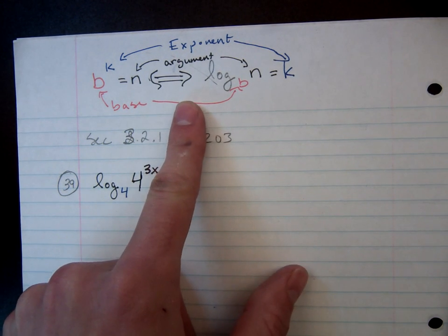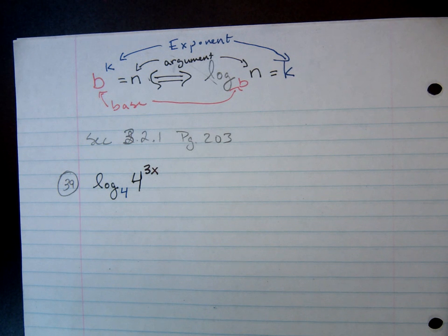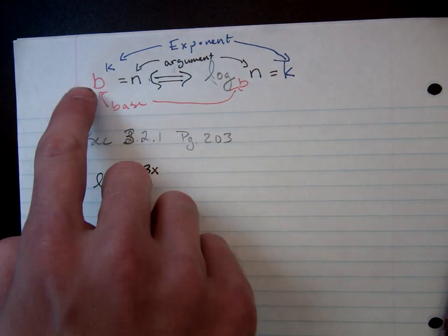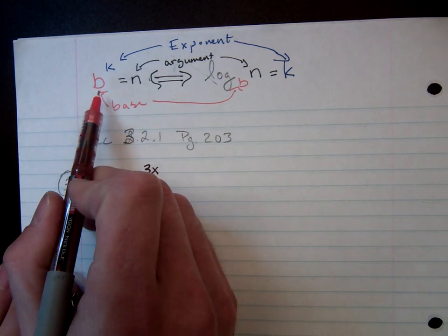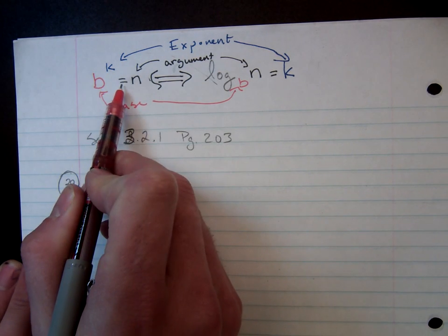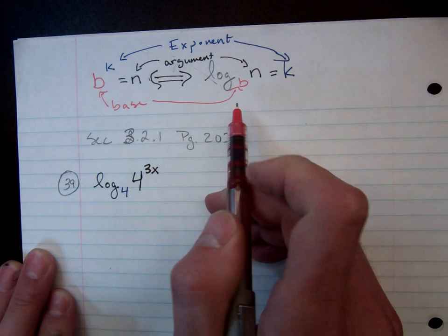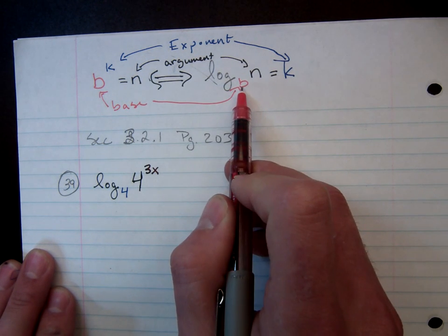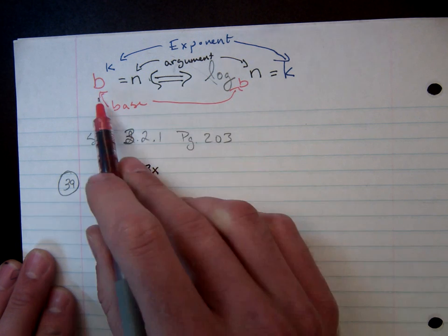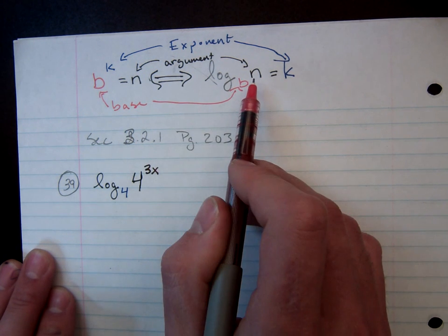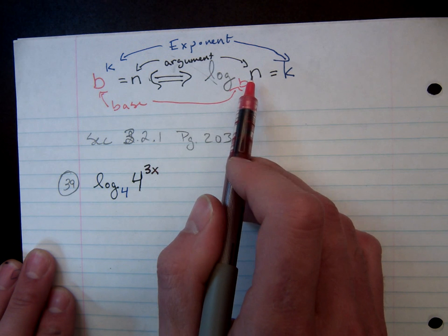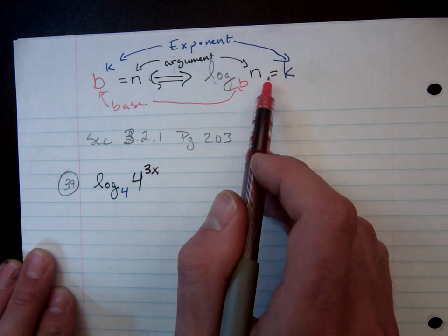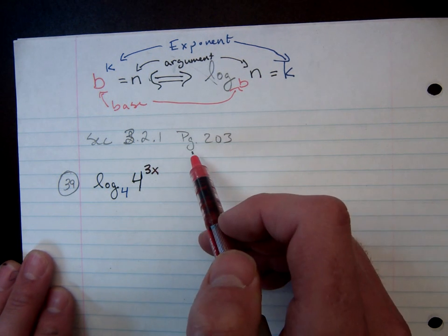And if you notice, up top here I wrote down the definitions of the two things we're dealing with. So right here we have exponents: the base to the exponent is equal to the argument, and then another way of writing that is the logarithm base b, and the bases are the same. The logarithm base b of the argument n is equal to the exponent k.